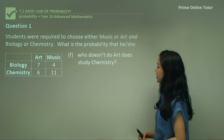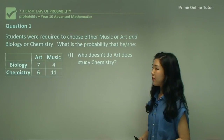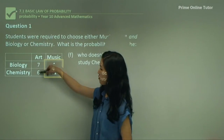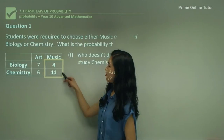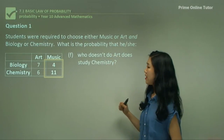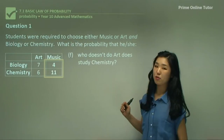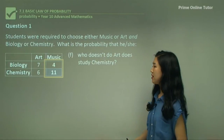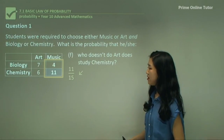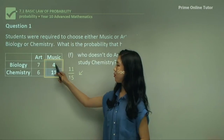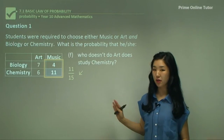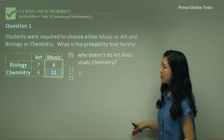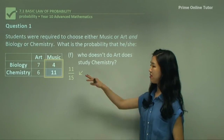Now F — who doesn't do art, does study chemistry. So out of the people who don't do art, which are these students — because this is the column for the art students — these are the students who don't do art. Now out of those students, who studies chemistry? These students here study chemistry as well as not choosing art. So 11 students out of the 11 plus 4 students — 15 students. Again, it's not going to be out of 28. So that was question one.